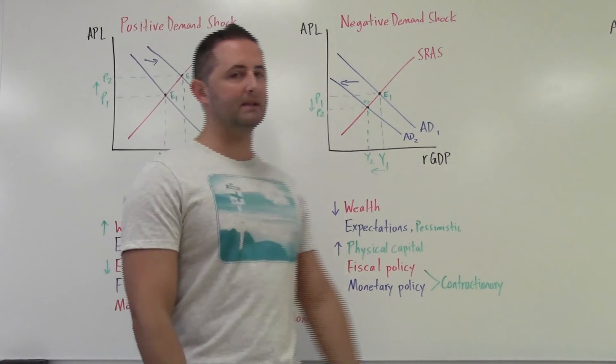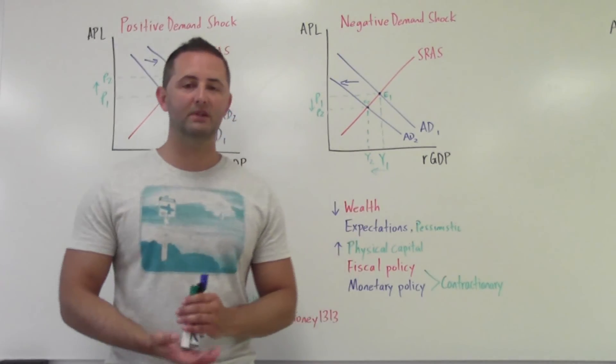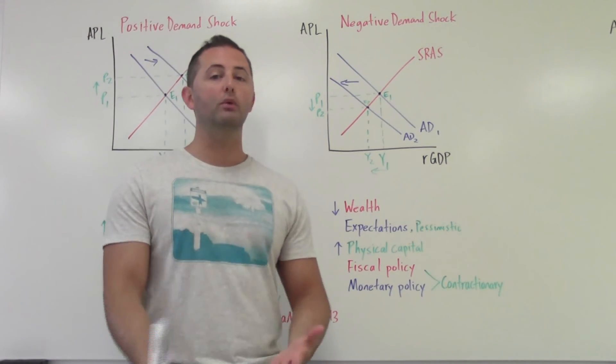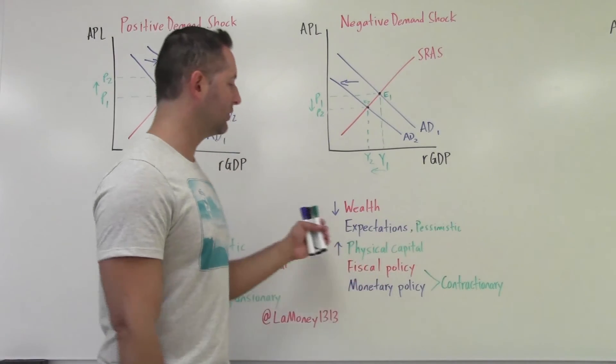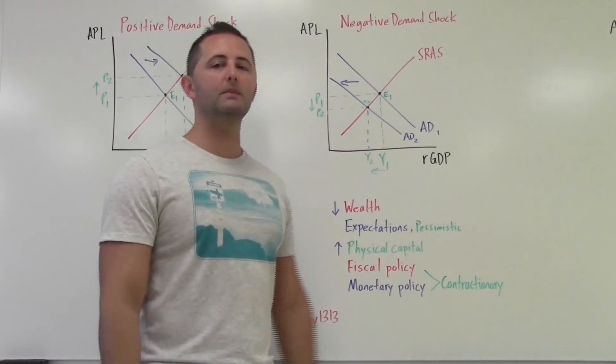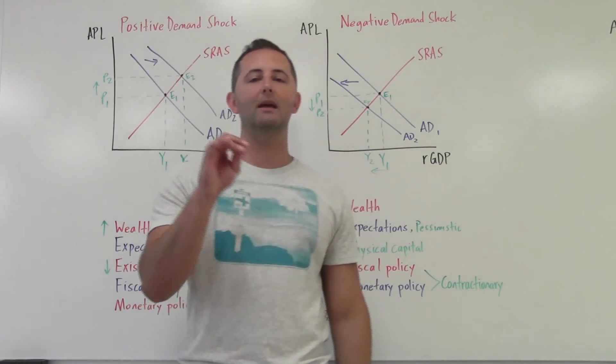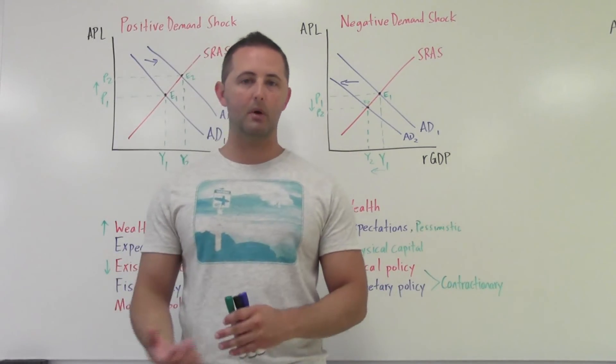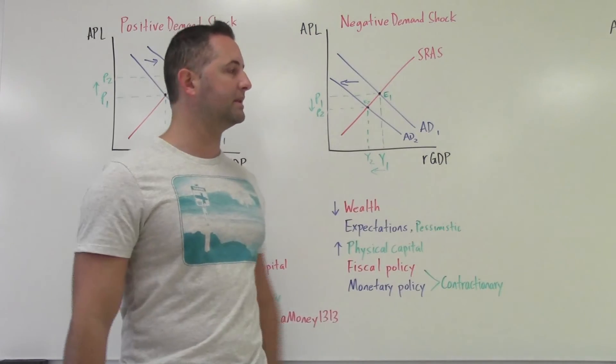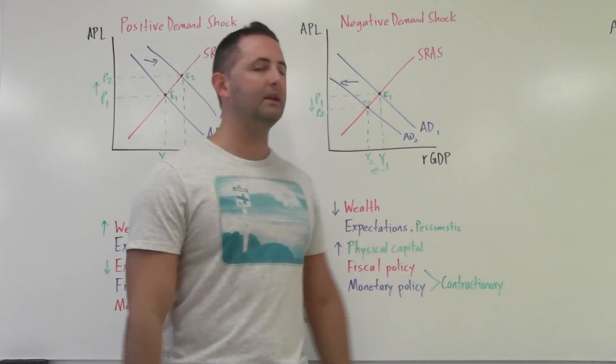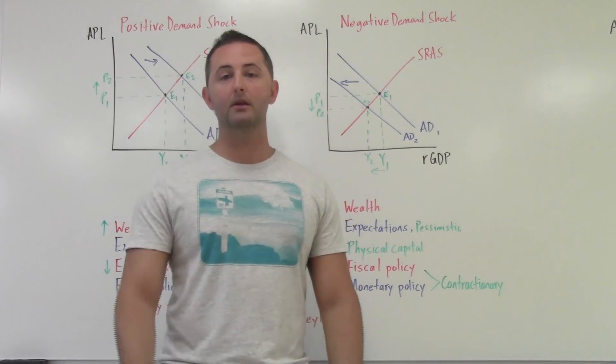If we have an increase, a high existing stock of physical capital means it does not need to be replenished, large inventories don't need to be replenished. So as a result of that, we don't buy as much, we don't demand as much, AD shifts left. And then for now, again, we're just going to suffice to say that contractionary fiscal and monetary policy would also decrease aggregate demand. And we'll leave it to future videos to really get into more detail about fiscal and monetary policy.